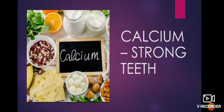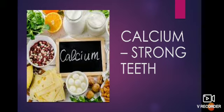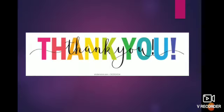In India, twigs of babul or neem plant have been used from ancient times to clean teeth. Even in villages, people still use these twigs, which have medicinal properties. Based on that, nowadays our toothpastes are also associated with such herbal medicinal plants. These make our teeth and gums more healthy. These are the ways we need to take care of our teeth.